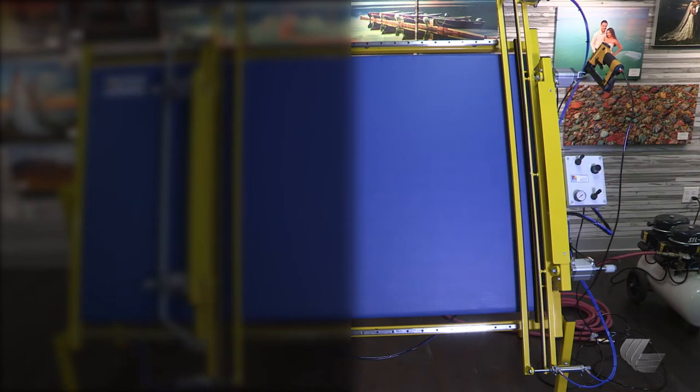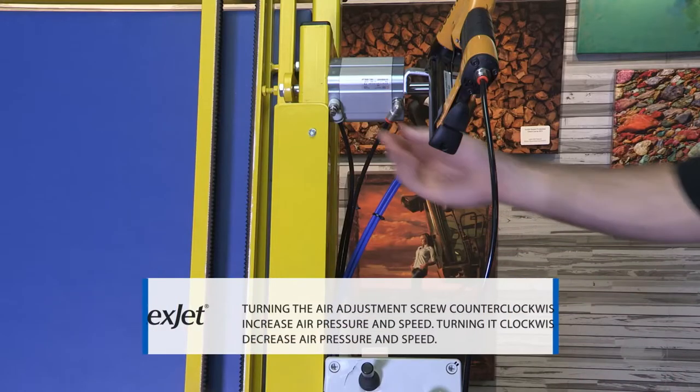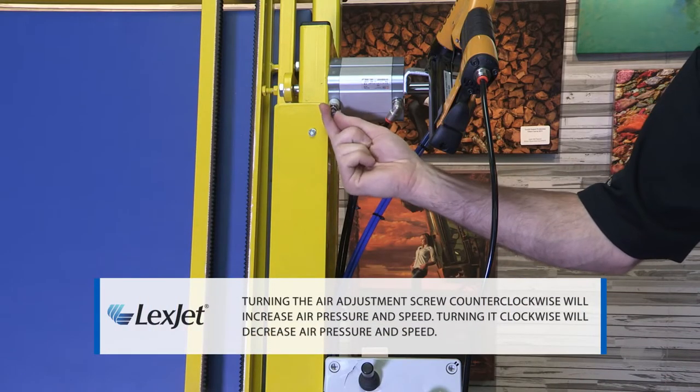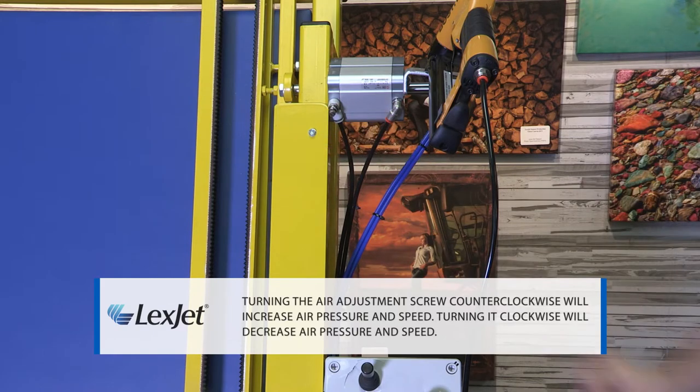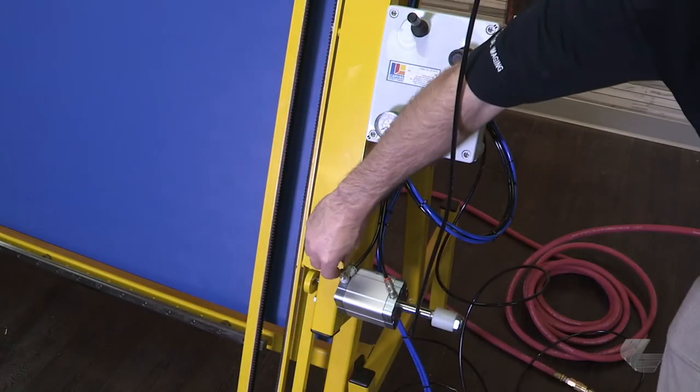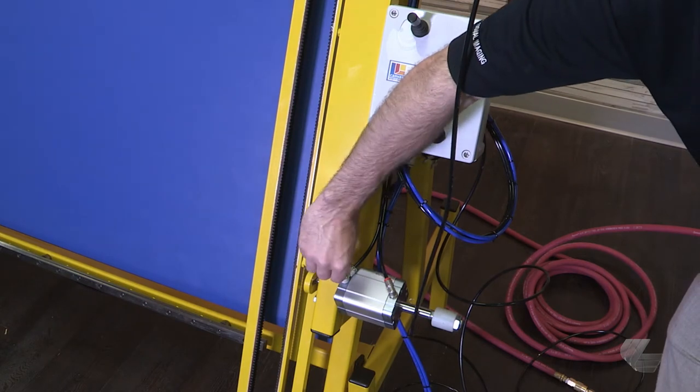Turn the air adjustment screw on the cylinder to allow more or less air to flow. Turning it counterclockwise will allow more air and increase speed. Turning it clockwise will allow less air and decrease speed.